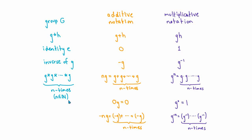If n is a natural number, we define minus ng in additive notation to be the additive inverse of g added to itself n times. In multiplicative notation, we define g to the minus n to be the multiplicative inverse of g multiplied with itself n times. This is all somewhat psychological — it's just two different notations for the same thing. The main thing to keep track of is whether you're viewing the group multiplicatively or additively.